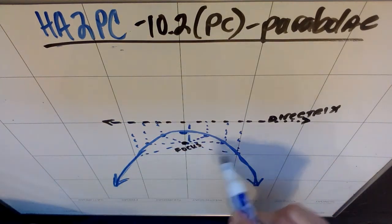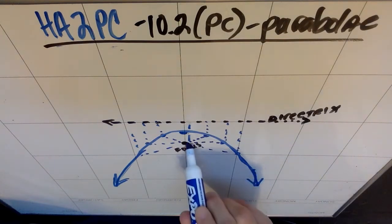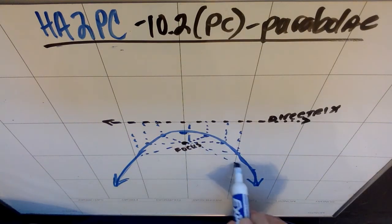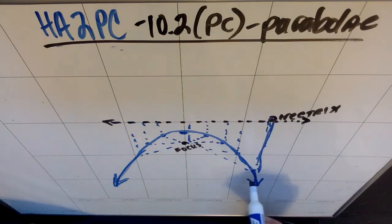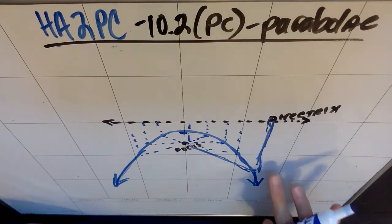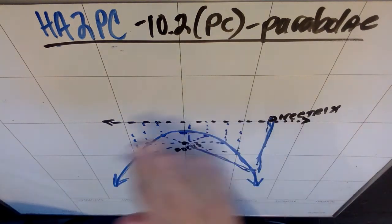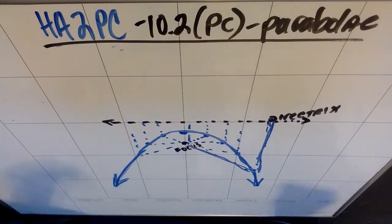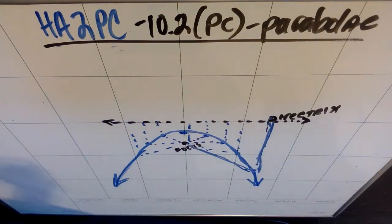Every point on this blue curve, if I pick a point, it should be the same distance from the focus that it is from the directrix. So the definition of a parabola is all these points on this blue curve are equidistant from the focus and the directrix.